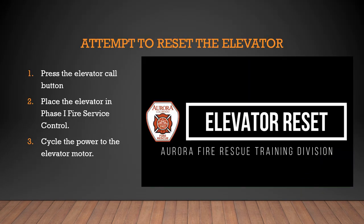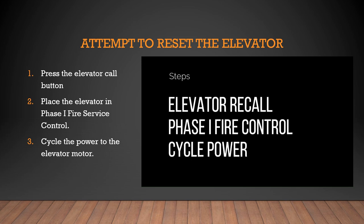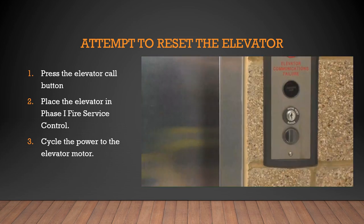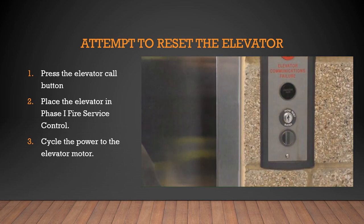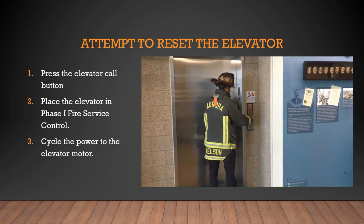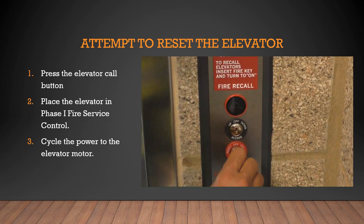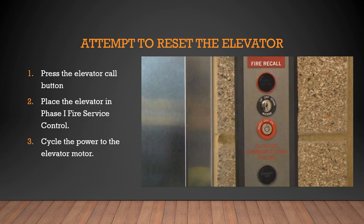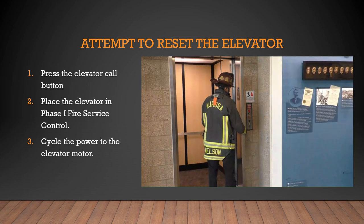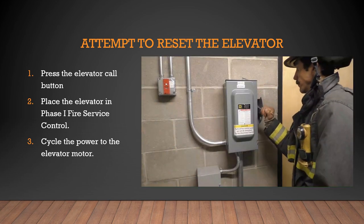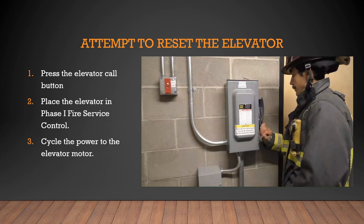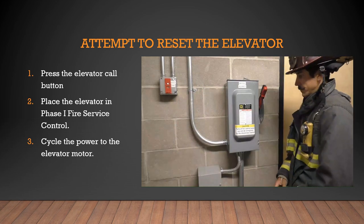Before starting the elevator rescue, there are three simple procedures that will often reset the elevator. First, always try using the elevator call button — for some elevator issues, this will bring the elevator to the designated floor and open the doors. If that didn't work, next place the elevator into phase one fire service control. The phase one fire service control keyway is normally on the first floor next to the elevator call button. Not all elevators have fire service control, and you will need to have the fire service control key with you. The last step is to cycle the power to the elevator motor — modern elevators are controlled with a computer processor, and like most computers, turning the power off for 20 to 30 seconds can reset the processor and potentially correct any problems.